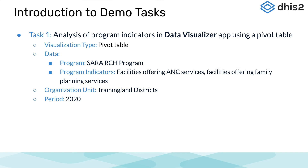There are four main tasks in this demonstration. The first is to demonstrate the analysis of program indicators from the SARA RCH program in a pivot table. We will look at the number of facilities offering antenatal care services and the number of facilities offering family planning services in 2020 at a district level.